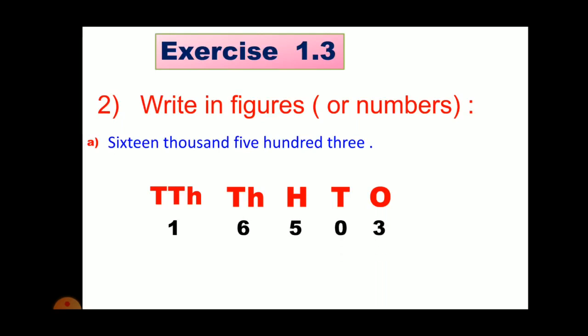So at 10's place, we will write 0. And at 1's place, we will write 3. Our number is 16,503. And put comma according to the period.